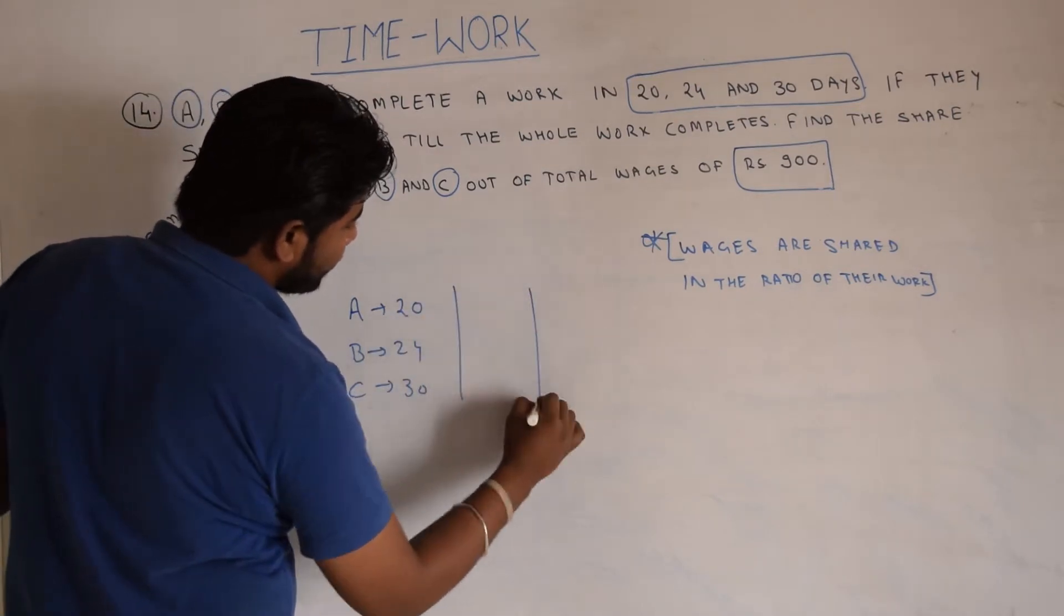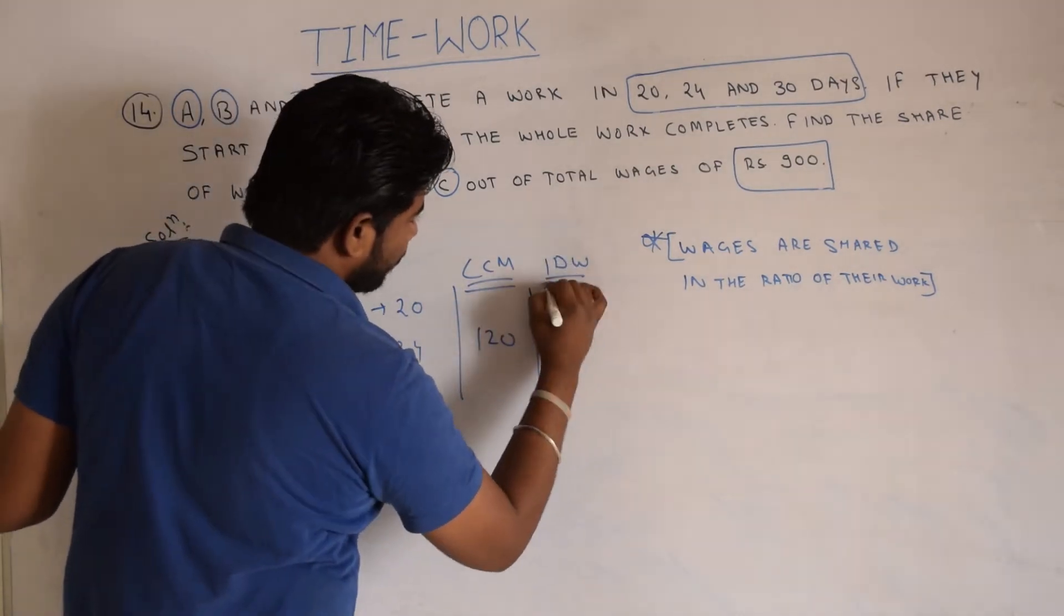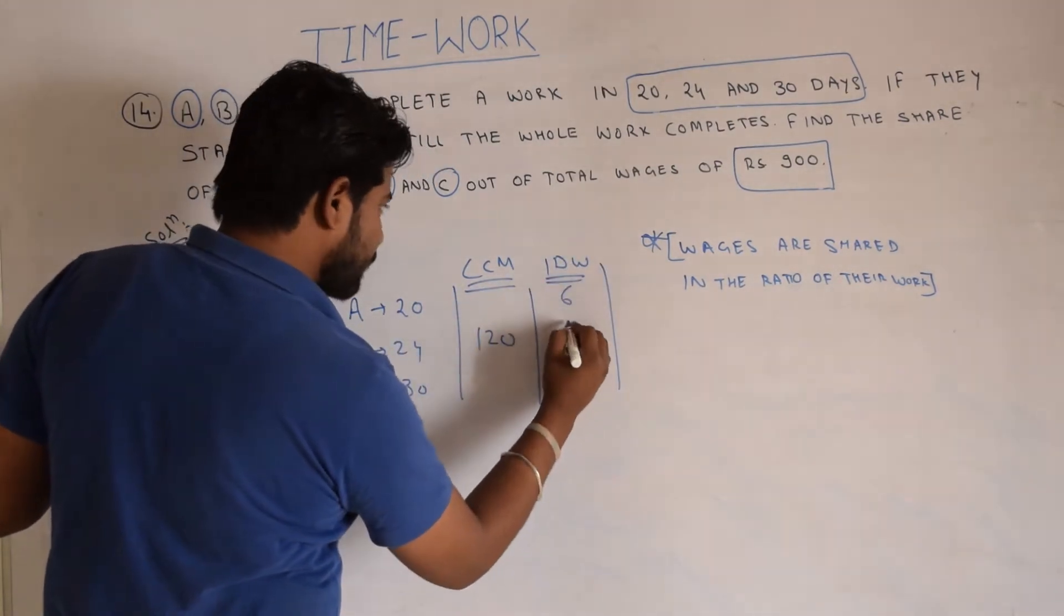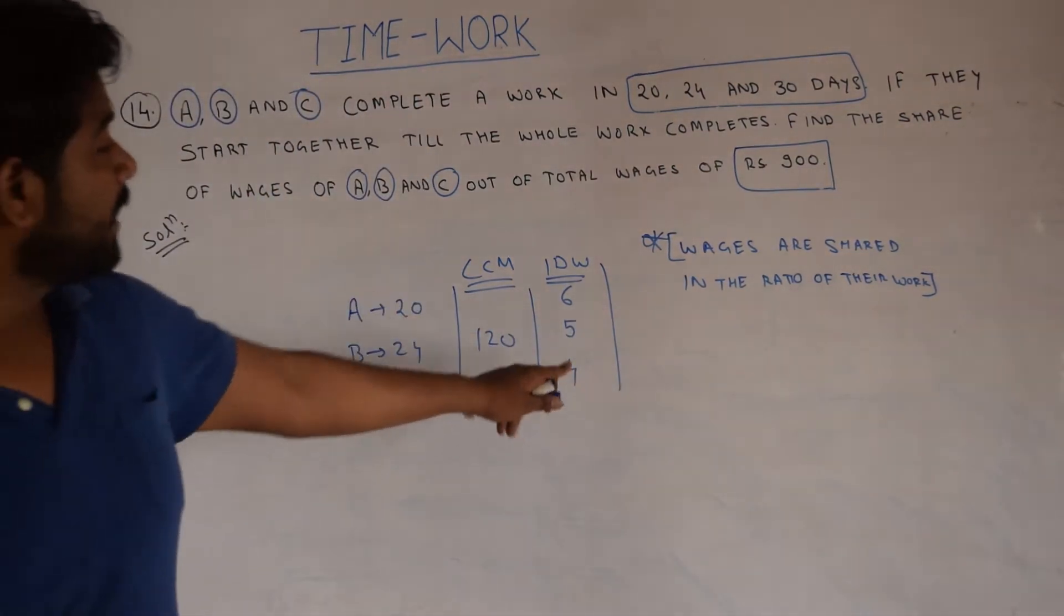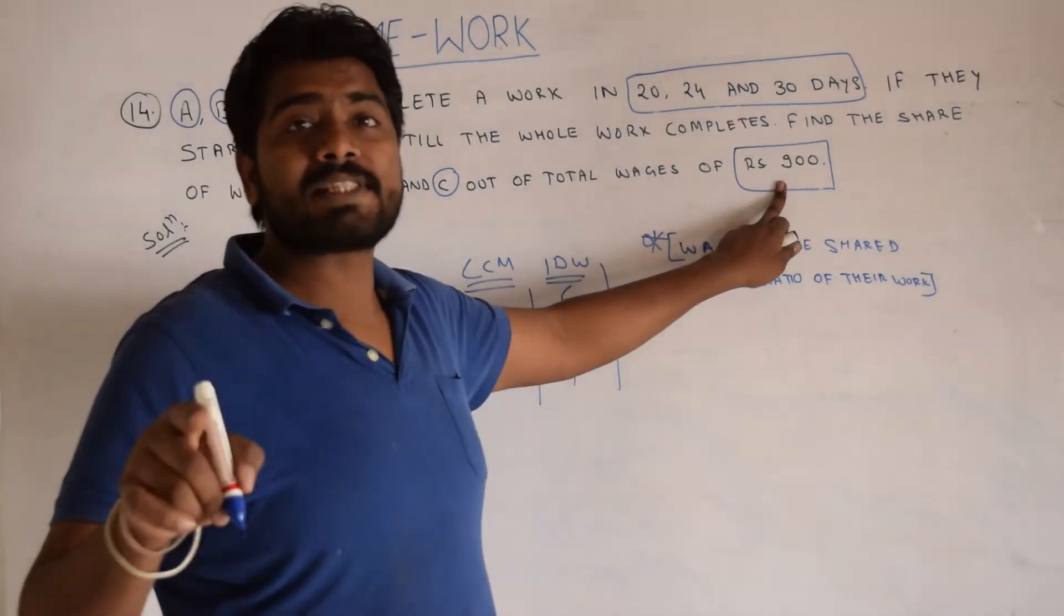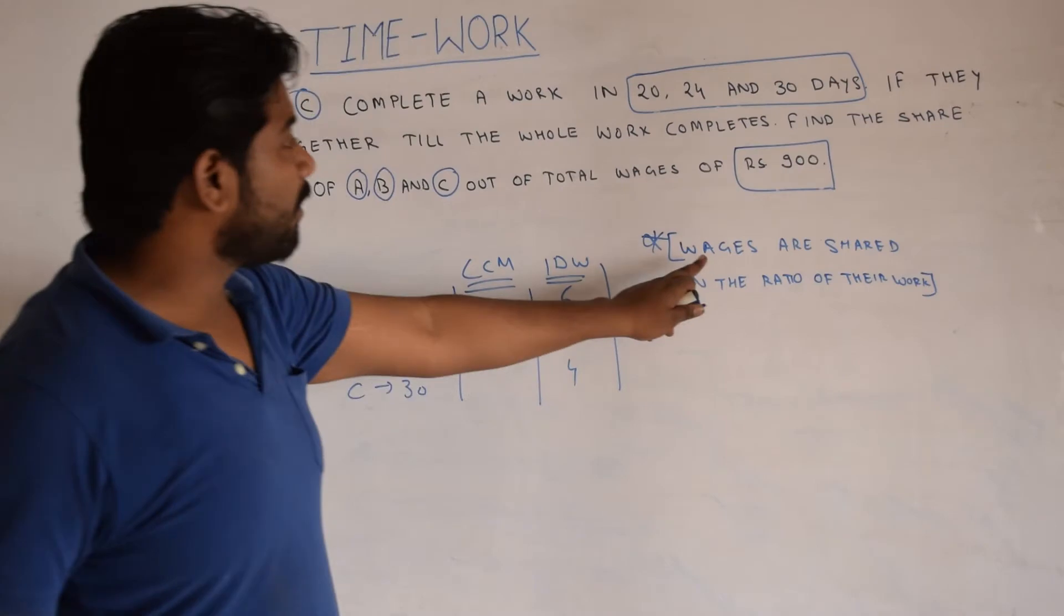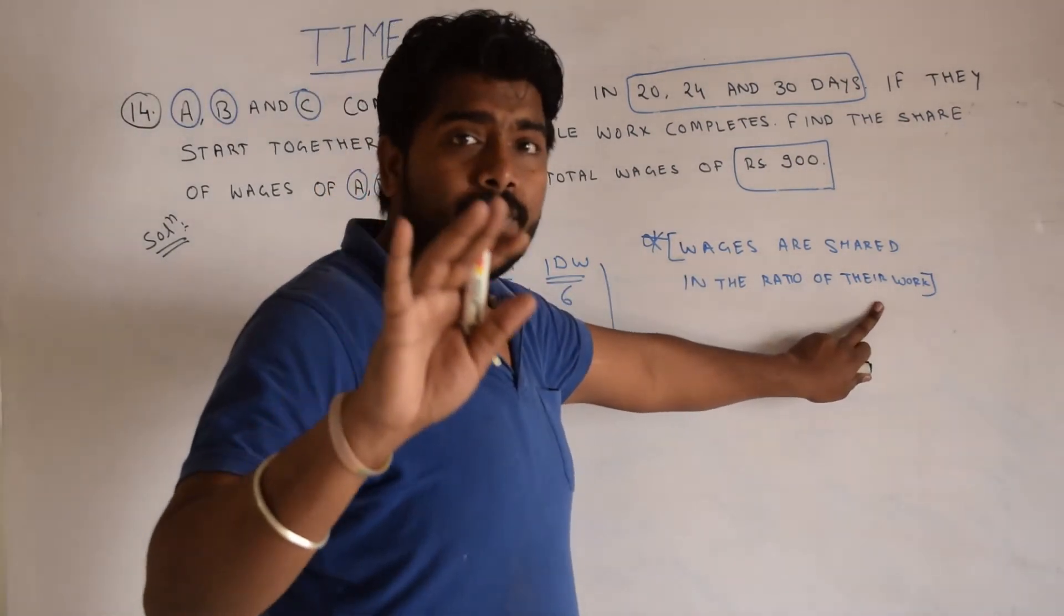Find the LCM. LCM will be 120. Find the one day work. One day work will be 6, 5 and 4. So what is the ratio of one day work? 6 is to 5 is to 4. So profit in which ratio we share? 6 is to 5 is to 4, because wages are shared, profits are shared in the ratio of their work.